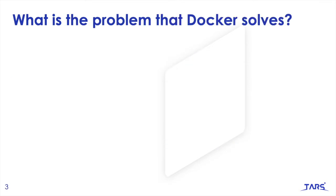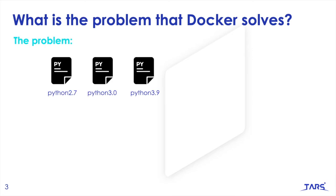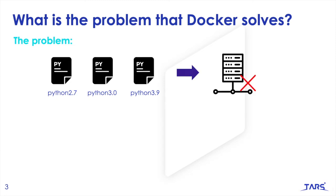And what is the problem that Docker solves? Let's imagine that we have three different Python-based applications that you plan to host on a single server, which can be either a physical or a virtual machine. Each of those applications makes use of different versions of Python, as well as libraries and dependencies that differ from one another. And since we cannot have different versions of Python installed on the same machine and run those three different scripts at once, this will prevent us from hosting all three applications on the same computer. And that's where Docker comes into place.